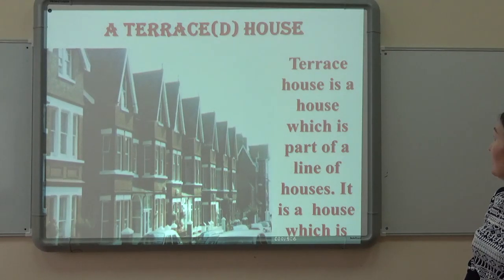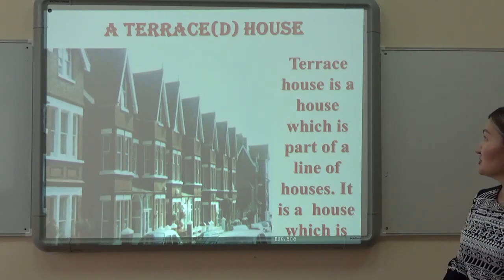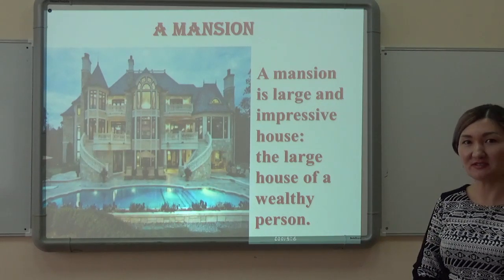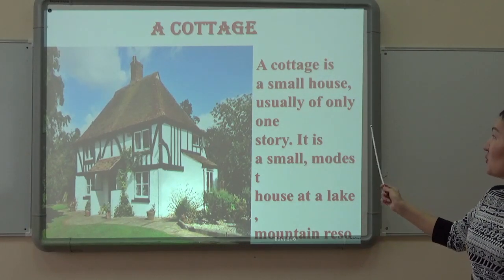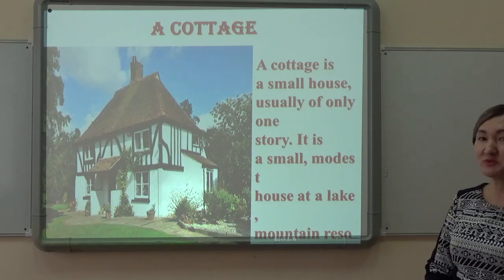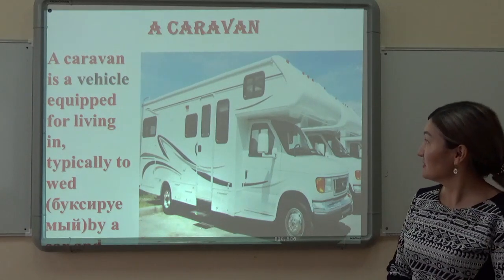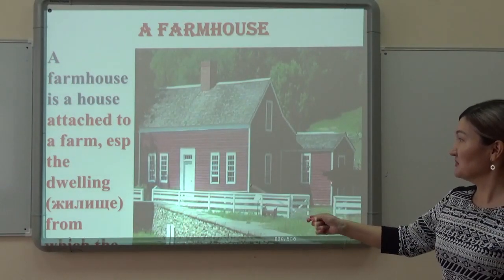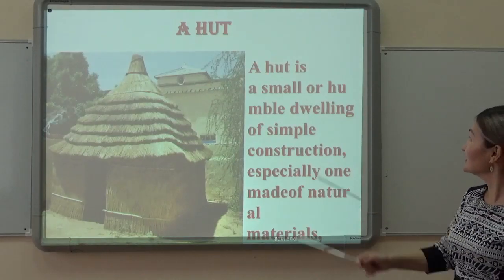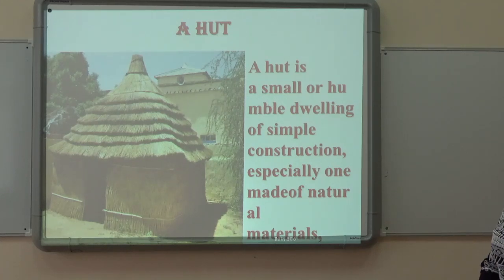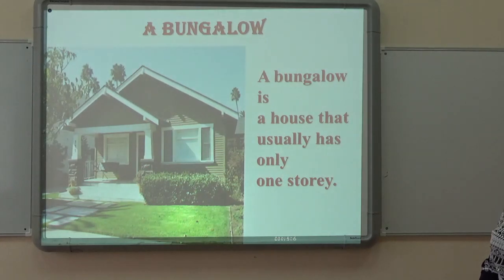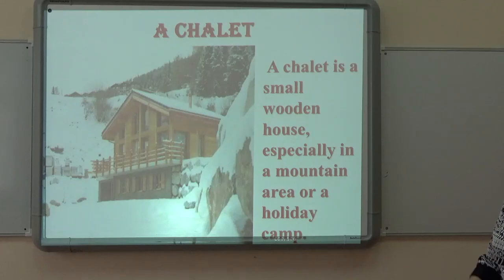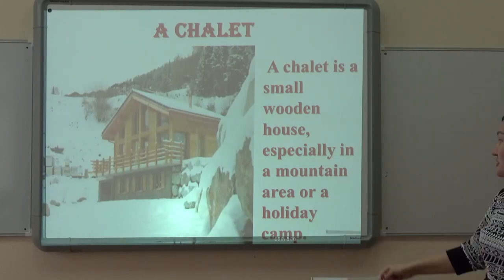A terraced house — it is a house which is part of a line of houses. A mansion — a mansion is a large and impressive house, the large house of a wealthy person. A cottage — a cottage is a small house, usually of only one story. A caravan — it is a vehicle equipped for living in. A farmhouse — it is a small or humble dwelling of simple construction, especially made of natural materials, usually with only one story. A skyscraper is a very tall building with many stories. A chalet is a small wooden house, especially in a mountain area or a holiday camp.